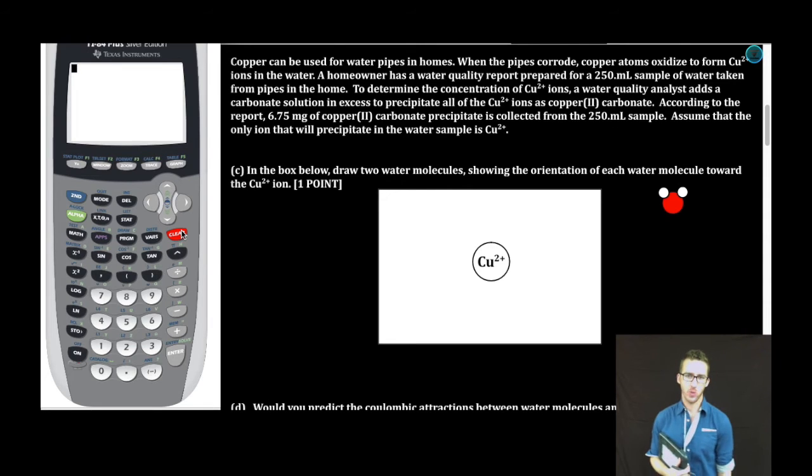It says copper can be used for water pipes in homes. When the pipes corrode, copper atoms oxidize to form copper two-plus ions in the water. A homeowner has a water quality report prepared for a 250 milliliter sample of water taken from pipes in the home. To determine the concentration of Cu2+ ions, a water quality analyst adds a carbonate solution in excess to precipitate all of the copper 2 plus ions as copper 2 carbonate. According to the report, 6.75 milligrams of copper 2 carbonate precipitate is collected from the 250 milliliter sample. What a thrilling problem this is.